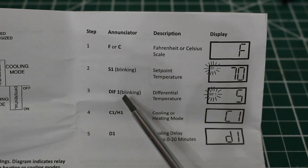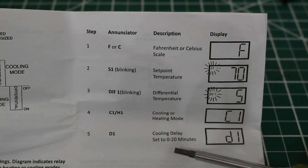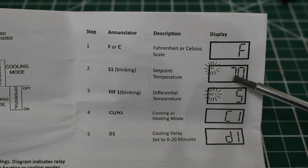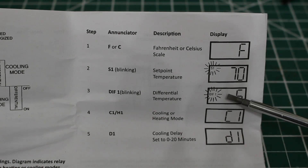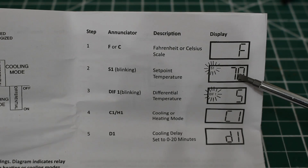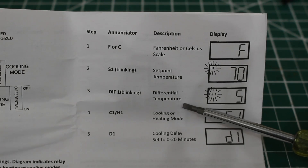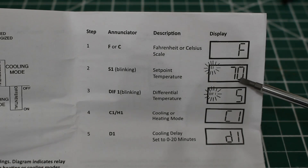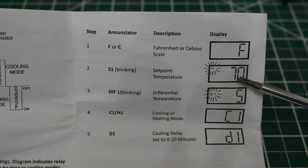Step three — you're going to see DIF1 or just a number, and it's going to be blinking. This is your differential temperature. So let's say you had your set point S1 at 37 and your differential set at 3. That means once the box reaches 40, it's going to kick back on until it reaches 37 and then kick off. So we're going to range between 37 and 40 degrees — that's going to be our on and off set points.